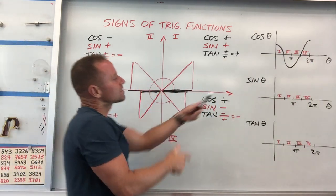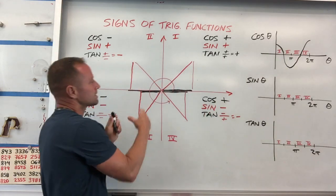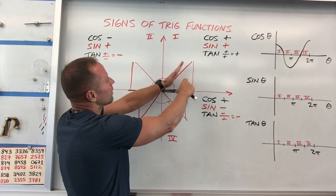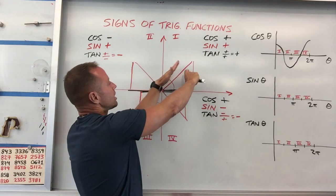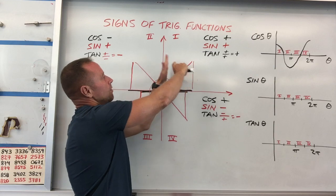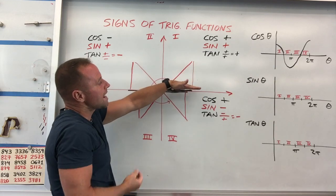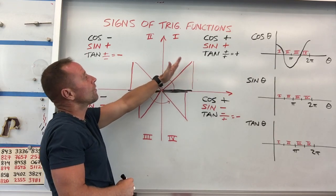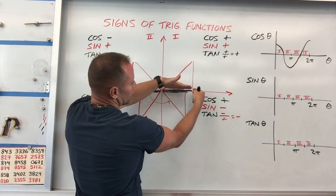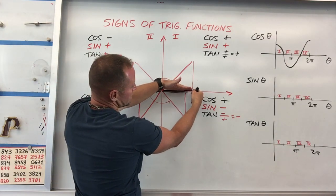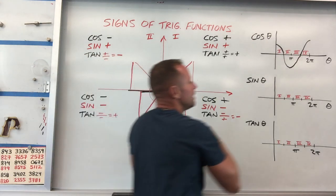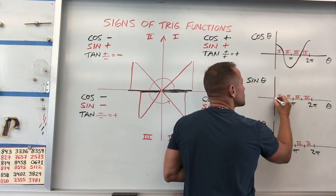Sine is really keeping track of this vertical projection. You notice when you're up here, your vertical projection — your vertical shadow, if you want — of this hypotenuse is always going to be positive. So sine stays positive throughout the first two quadrants. The vertical projection is zero when you're here, and then it gets bigger and bigger. So sine starts at zero and stays positive throughout the first two quadrants.